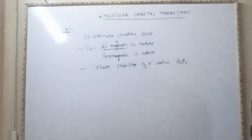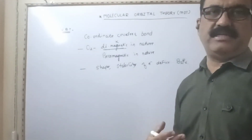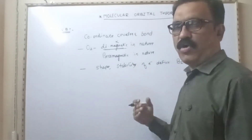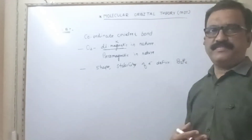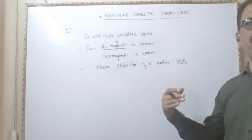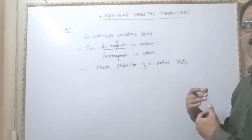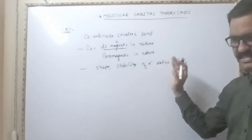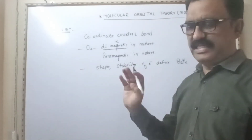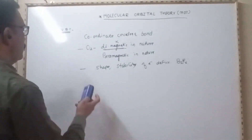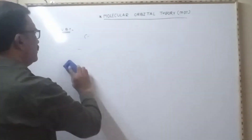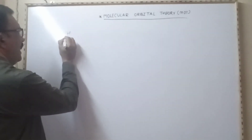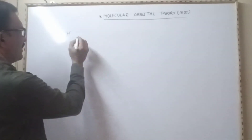This Molecular Orbital Theory gives a satisfactory and well explanation about the electron distribution in a molecule. This theory is necessary because it explains how electrons are distributed within the molecular space, rather than just in individual atomic orbitals.